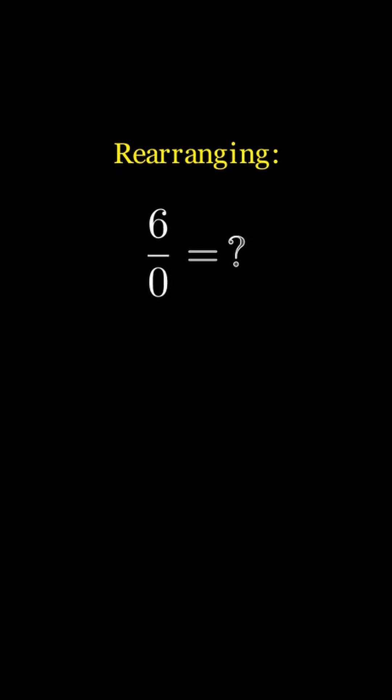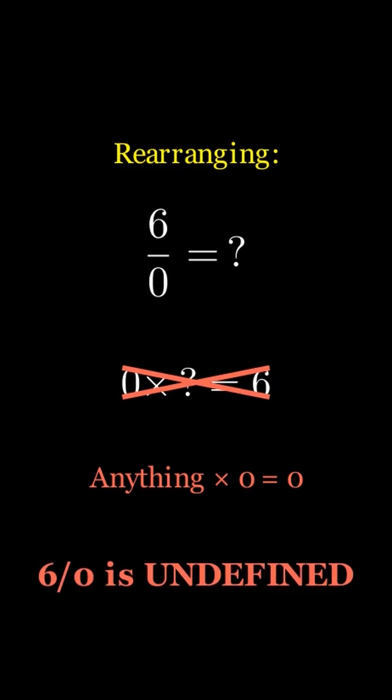Now let's rearrange 6 divided by 0 equals question mark. We get 0 times question mark equals 6, but anything times 0 equals 0, so this is invalid, and thus 6 divided by 0 is undefined.